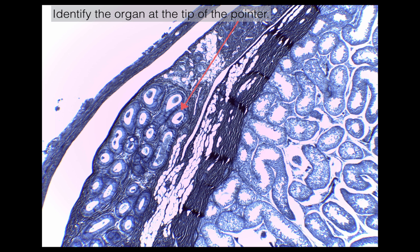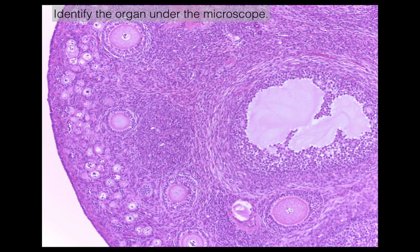Take a moment and identify the organ at the tip of the pointer. You should have come up with epididymis — we actually already saw a similar slide in quiz one. I just wanted to show you a different look, because we also have this in our slide boxes. Epididymis would be up here and the testis is down here.